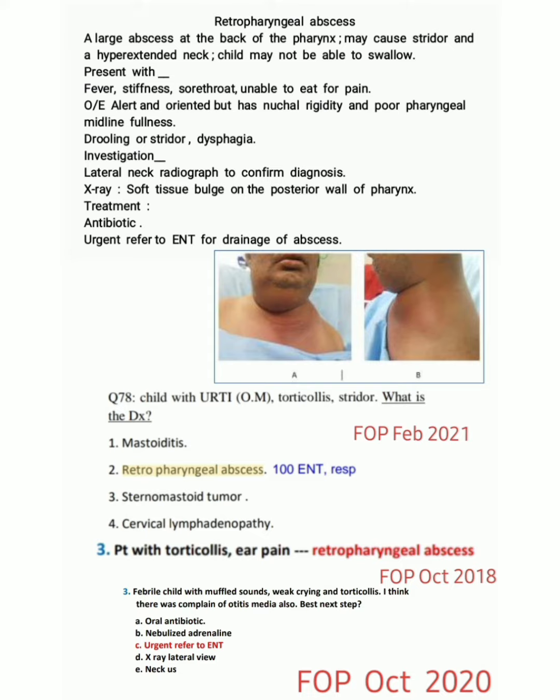The next question is a patient with torticollis and ear pain — all presentations supporting Retropharyngeal abscess. The last question is a febrile child with muffled sounds, weak crying, torticollis, and complaint of otitis media — best next step? All key points point to Retropharyngeal abscess, and since the treatment is antibiotics and urgent referral to ENT for drainage, the answer is urgent referral to ENT.